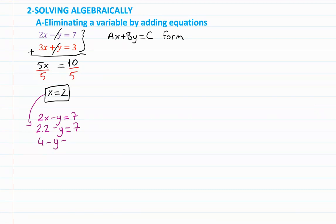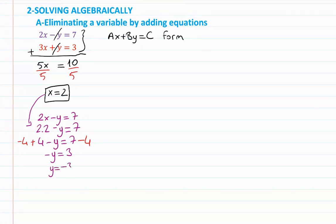4 minus y equals 7. Subtracting 4 from both sides gives negative y equals 3, so y equals negative 3. We found (2, -3) as the solution, which matches the graphical solution.